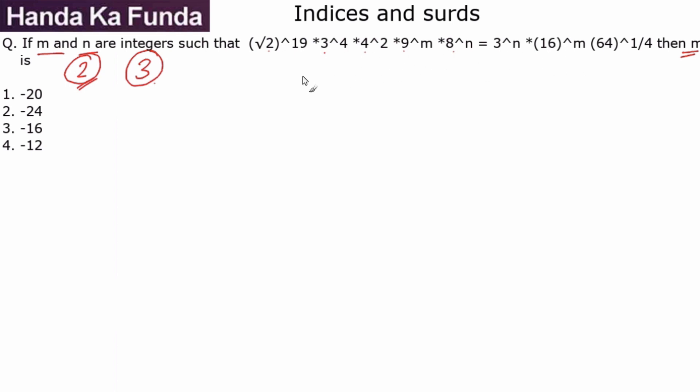So let's try and figure that out. First of all, we have root 2 to the power of 19, which is nothing else but 2 to the power half to the power of 19, which is 2 to the power of 9.5.